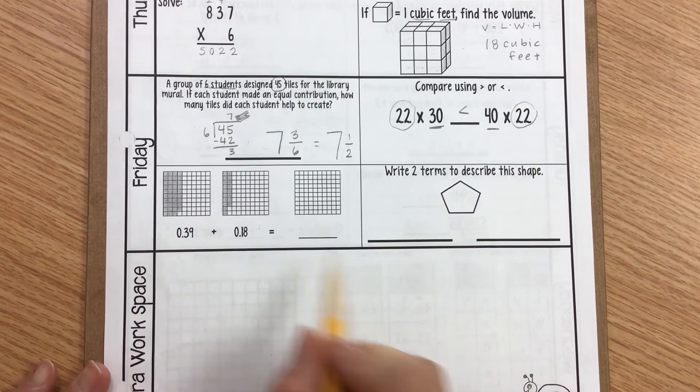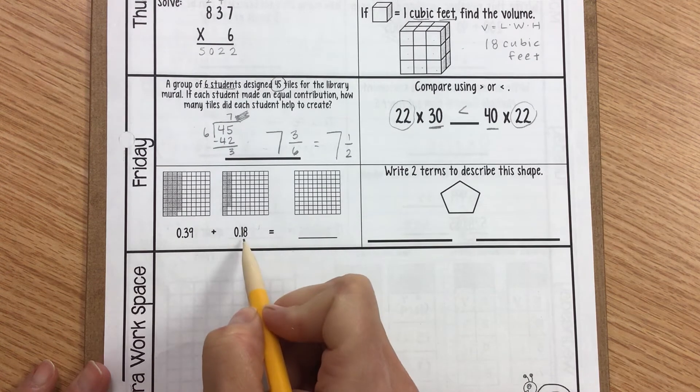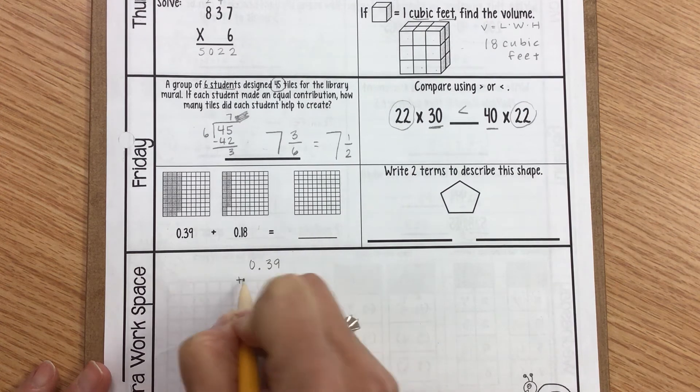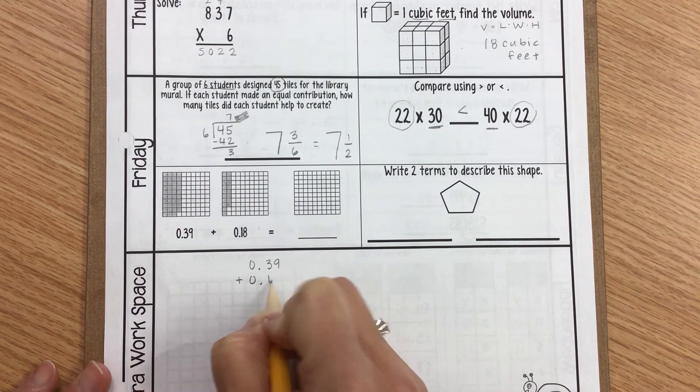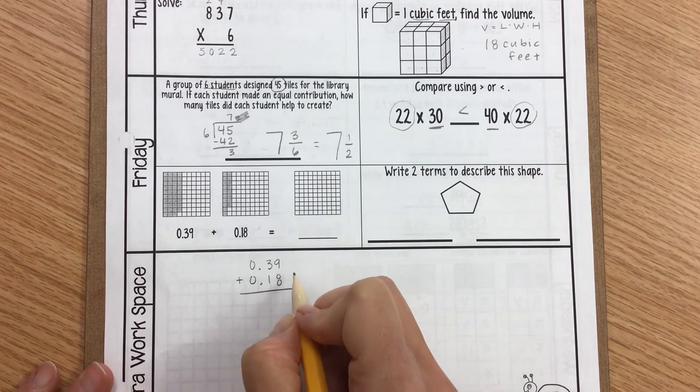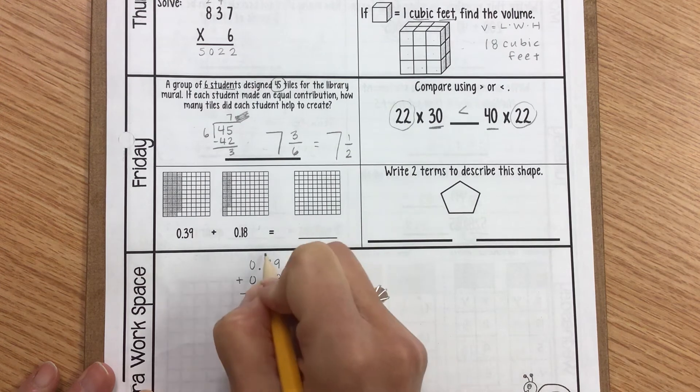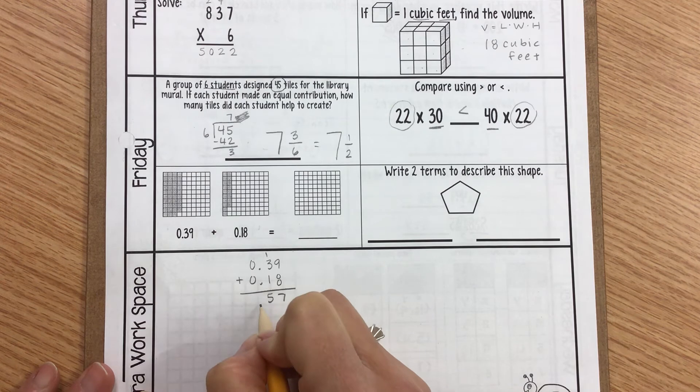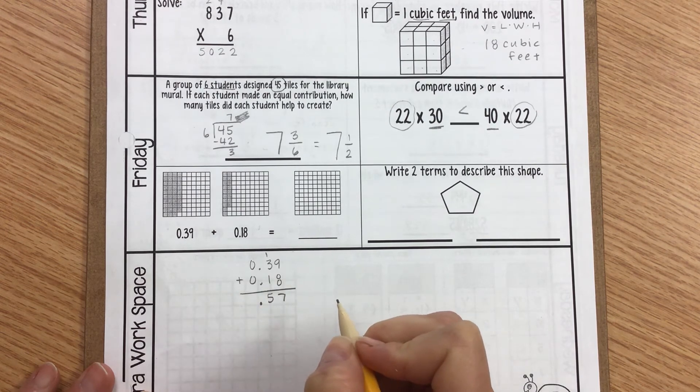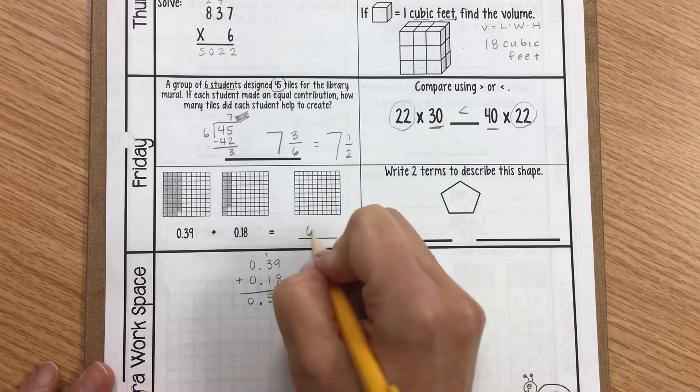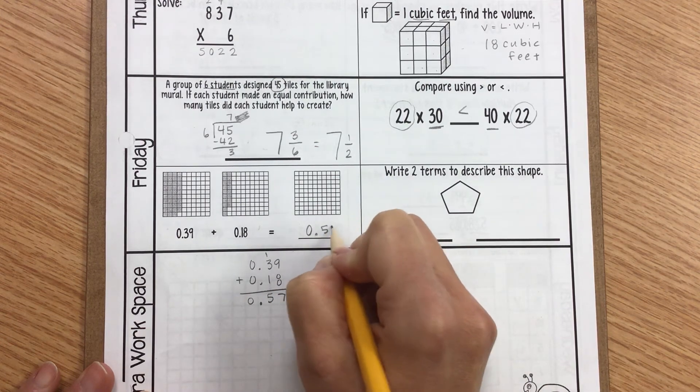Alright, so now I've got 39 hundredths plus 18 hundredths. I'm going to rewrite that down here to give myself some space to write. 39 hundredths plus 18 hundredths. 9 plus 8 is 17. 1 plus 3 plus 1 is 5. Bring down my decimal point. Remember, we're just going to line those up and bring down my 0. So my answer is 57 hundredths.